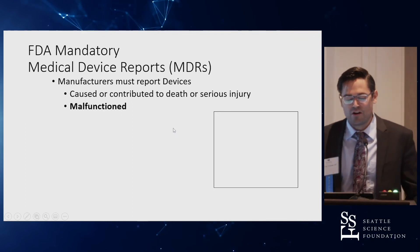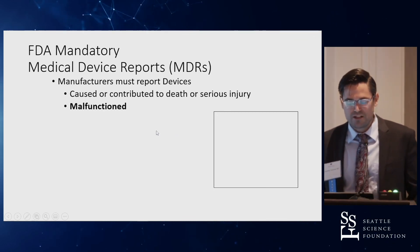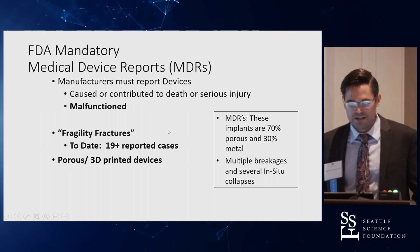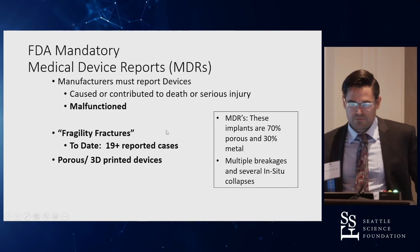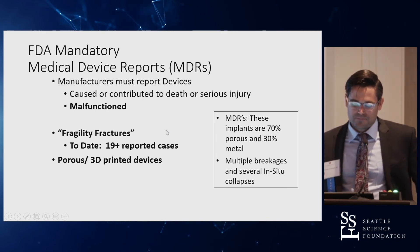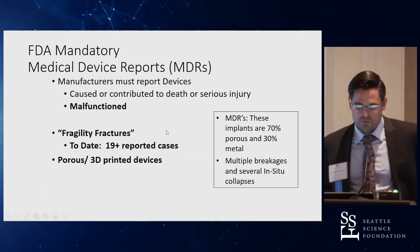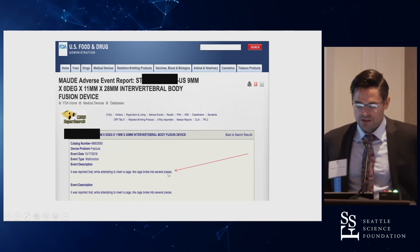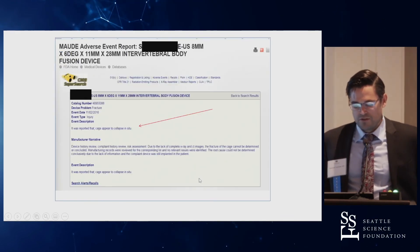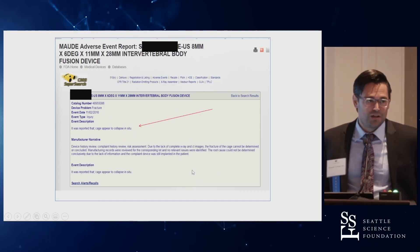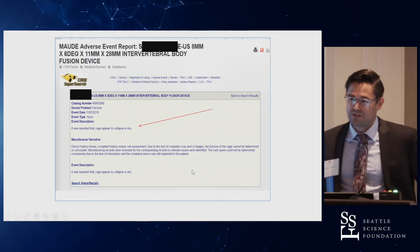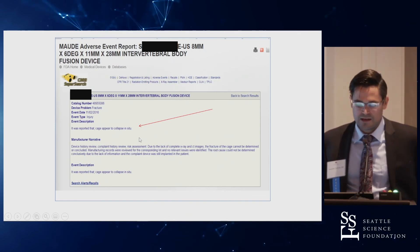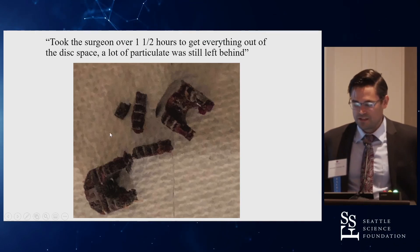There are certainly issues with 3D printed implants. Medical device reports for any new implant capture related issues, and the 3D printed implants — because of their porosity and attempts to make them more bone-like — have reports of fragility fractures. There are 19 reported cases to date, including cages breaking into multiple pieces or collapsing in situ. We see end plate fractures from interbody fusions, but until 3D printed cages, no one had heard of the actual cage itself collapsing.